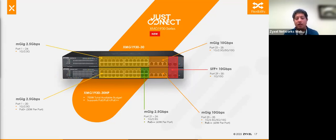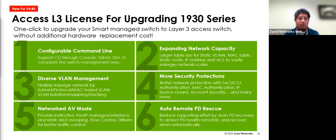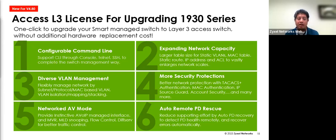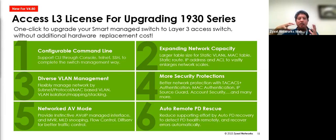Those are just some port configurations to keep in mind. We tried to color-code it so you can see what's what, and the LEDs are color-coded too so when devices are connected you can find out what speed they're connected at. This is why I was waiting to tell you about the 1930 series: our Access Layer 3 license upgrade for the 1930 series is available today. With one click, you can upgrade the smart managed switch hardware platform to a Layer 3 access switch without any additional hardware or replacing the network.